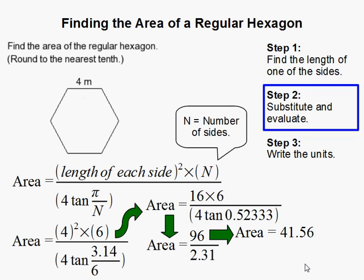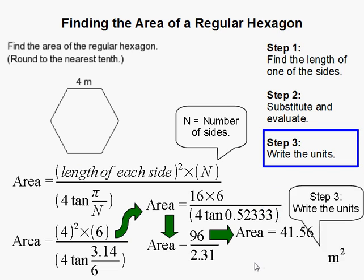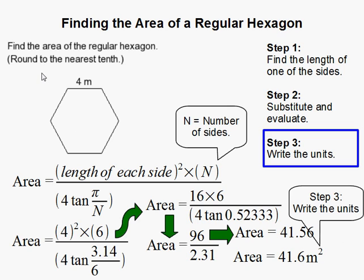The last thing to do is write the units. So we have 41.6 meters squared, because the question explicitly says to round to the nearest tenth — that's why we use 41.6 and not 41.56. Remember also that this is area, so the units have to be squared; that's why we have meters squared and not meters cubed.